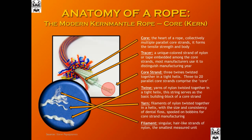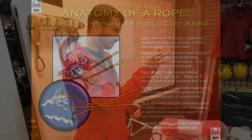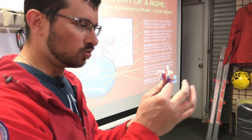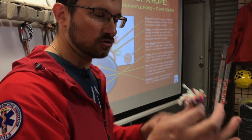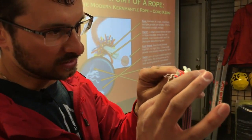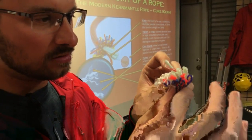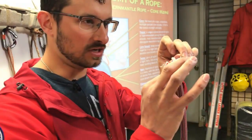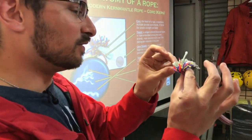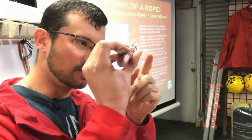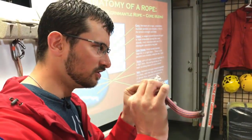The modern kernmantle rope — the kern is the core, the mantle is the sheath. The core is not one singular element; it's comprised of anywhere from 3 to 20 core strands, and those strands consist of three twines each in a tight helix. When you further break that down, there are yarns — the consistency of dental floss — woven together to create the twine. Break that down even further and you have the filaments, these little hair-like features visible in the light, which are the most singular element of a rope core.